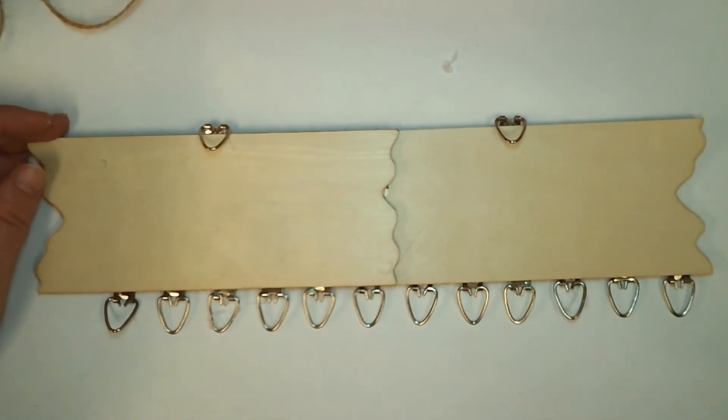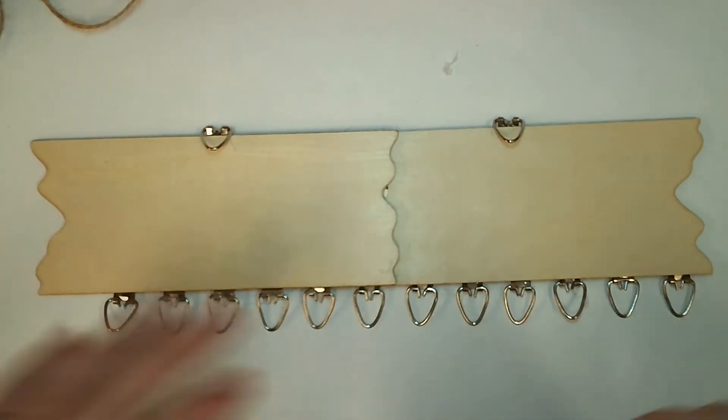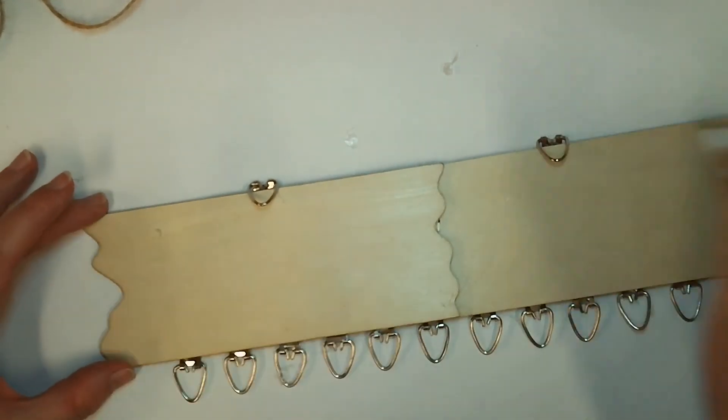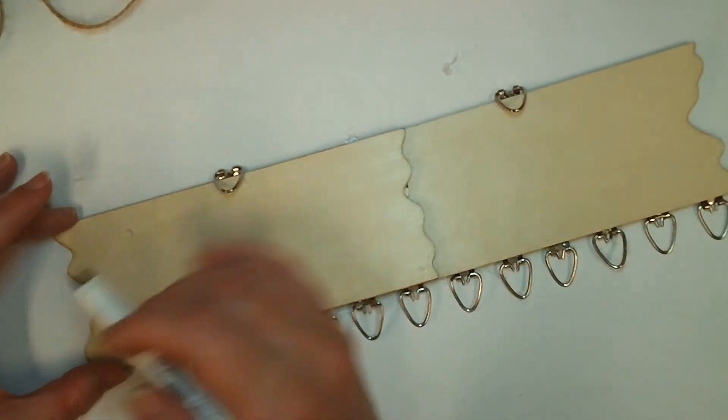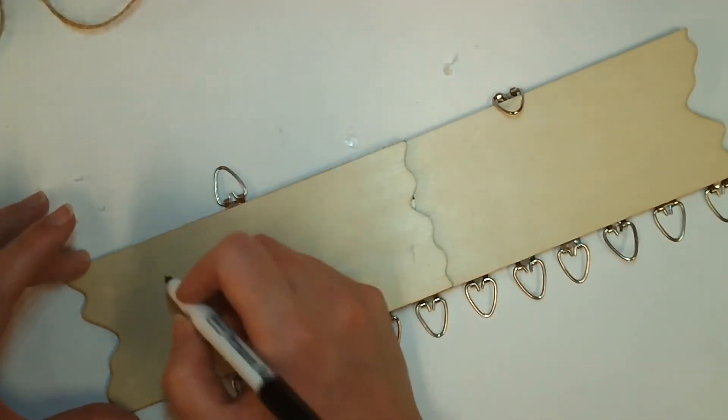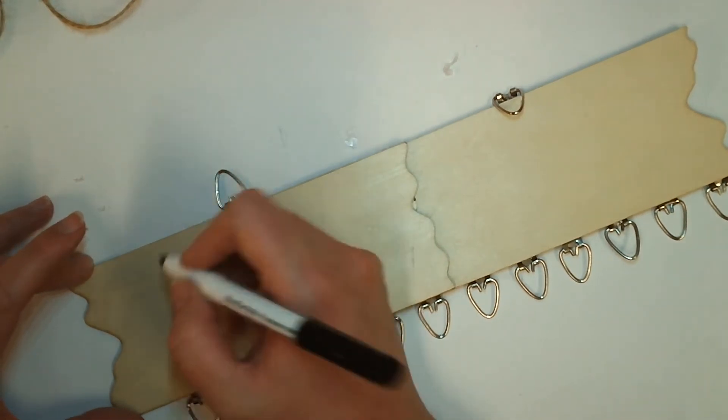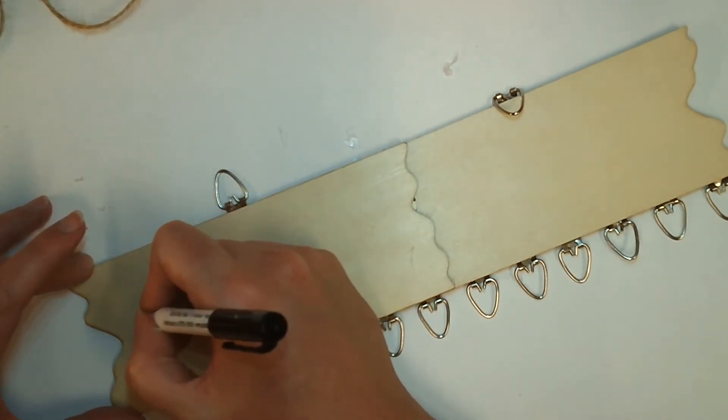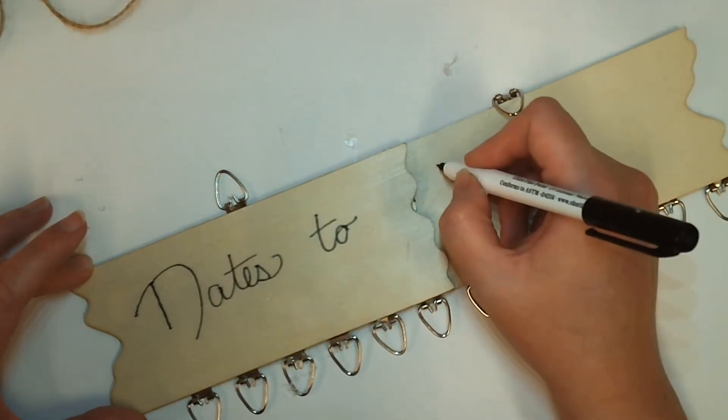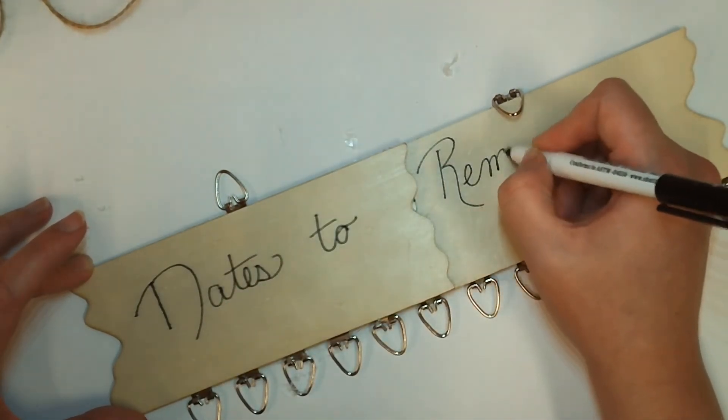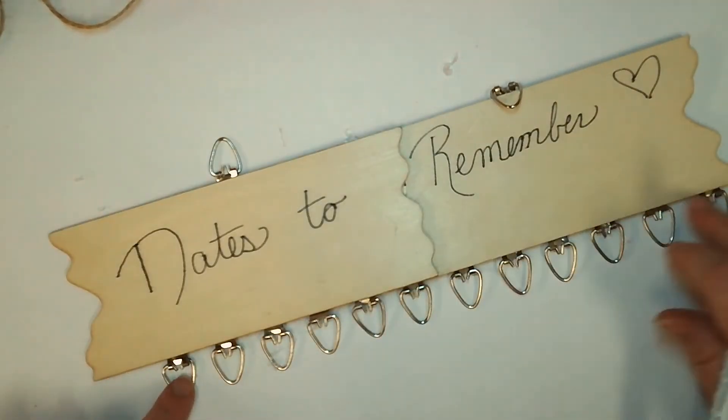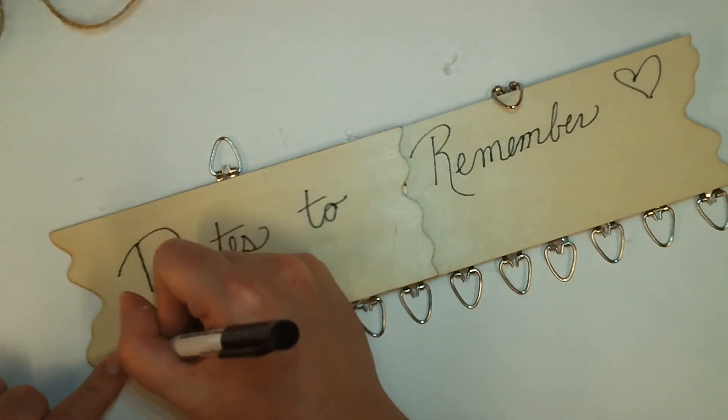So now you're going to use your marker and write whatever you want on here for your thing. So if you want to say family important dates or family days or whatever you'd like it to be, birthdays for the family, go ahead and write that on here now. And then down here at the bottom, go ahead and write your months.